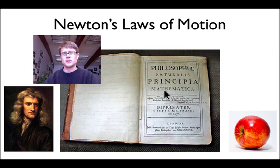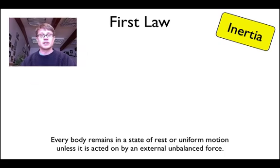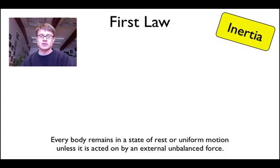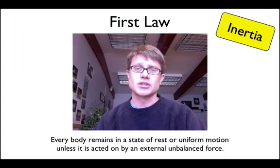So let's go through Newton's Laws of Motion. The First Law is sometimes referred to as the Law of Inertia. It reads: every body remains in a state of rest or uniform motion unless acted on by an external unbalanced force. This kind of summarizes the work of Galileo. What it means is that all objects that are at rest or in motion have a certain amount of inertia, and that never changes.